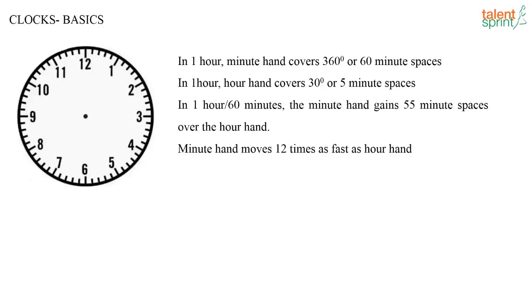Time is represented in terms of hours, minutes, and seconds. 60 seconds make up one minute, 60 minutes make up one hour, and there are 24 hours in a day. A clock has two major hands: the hour hand and the minute hand. The hour hand indicates time in terms of hours and the minute hand indicates time in terms of minutes.